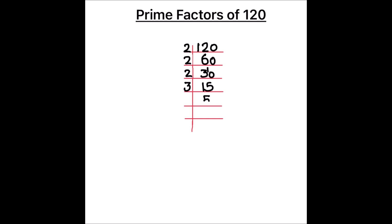And 5 is a prime number. It is only divisible by number 5. 5 times 1 is 5. So our number is fully divided and the prime factors of number 120 will be all the factors which are written on the left hand side of the ladder.